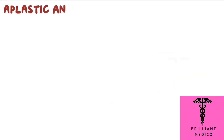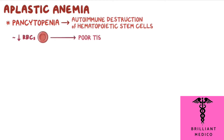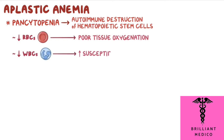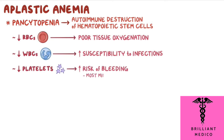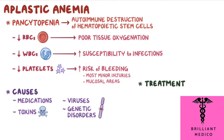As a quick recap, aplastic anemia is actually a form of pancytopenia that results from autoimmune destruction of the hematopoietic stem cells. Low red blood cell numbers cause poor tissue oxygenation. Low white blood cells cause an increased susceptibility to infections, while low platelets leads to an increased risk of bleeding from the most minor injuries and in mucosal areas. Most often, aplastic anemia is caused by medications, toxins, viruses, and genetic disorders. Treatment involves either stem cell transplant or immunosuppressive therapy.